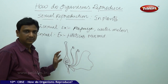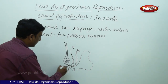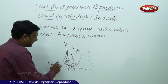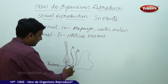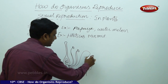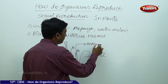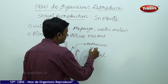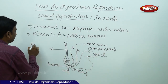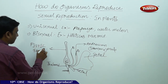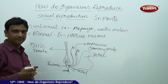We have already studied the structure of a flower. It consists of different parts. There is a base called the thalamus on which all other parts are embedded. There is the peduncle, the sepal, and the colored part that attracts insects — called the petal. The male reproductive part is called the androecium or stamen, and the female reproductive part is called the pistil.